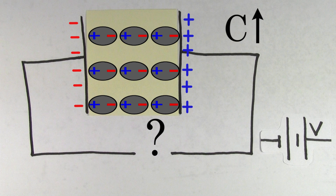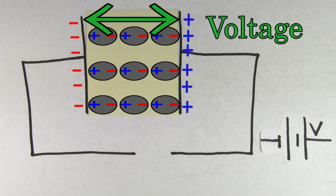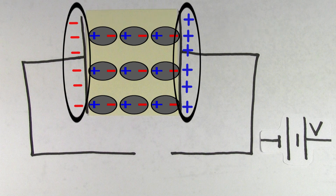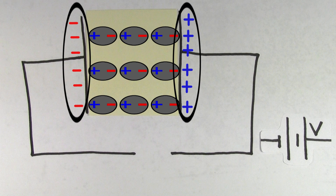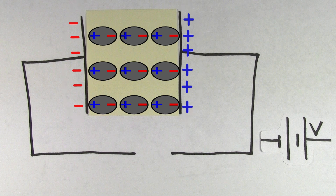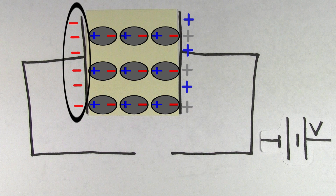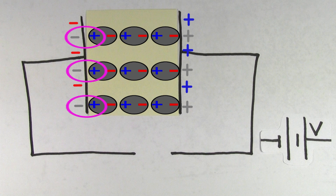Either way, the end result is that the negatives in the atoms and molecules are going to face the positive capacitor plate, and the positives are going to face the negative capacitor plate. So how does this increase the capacitance? The reason is that it reduces the voltage between the capacitor plates, because even though there's still just as many charges on the capacitor plates, their contribution to the voltage is being partially cancelled. Some of the positive charges on the capacitor plate are having their contribution to the voltage negated by the fact that there's a negative charge right next to them now.